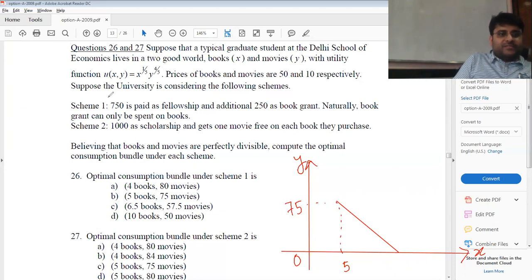Now, we have seen that the expenditure on X and Y has to be in the ratio 1 is to 4. So out of the 1000, if I say my budget line was basically this, out of the 1000, 200 will be spent on the books and 800 on the movies. That's not possible. But that is the optimal according to the utility function. The utility function told us expenditure on X by expenditure on Y is in the ratio 1 is to 4.